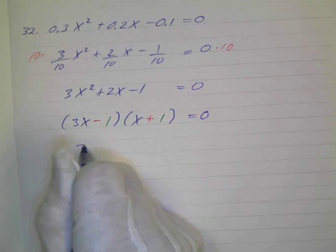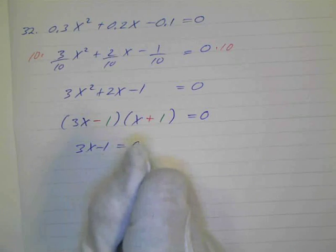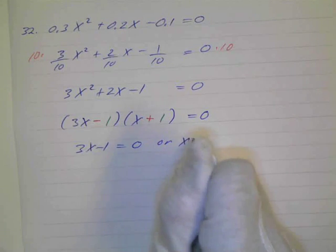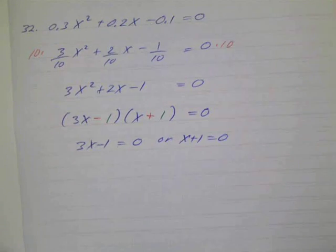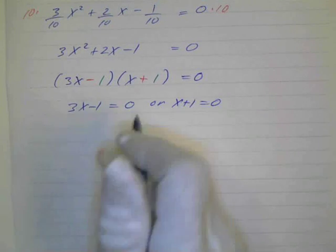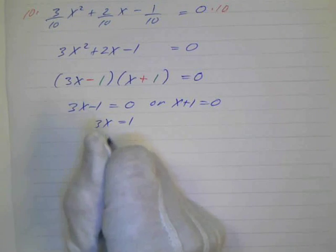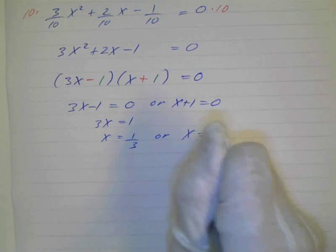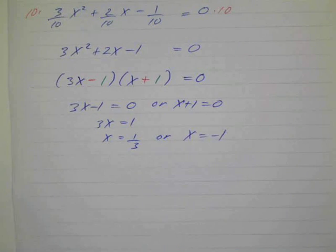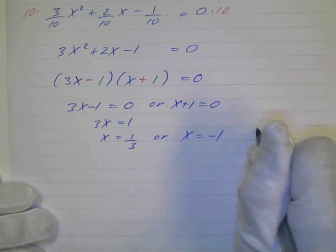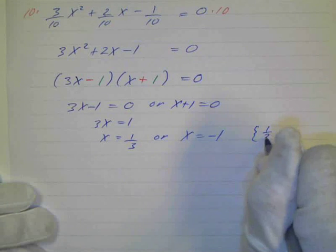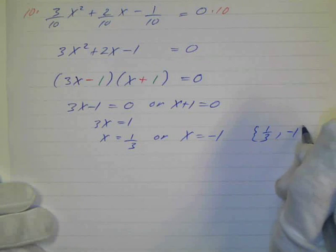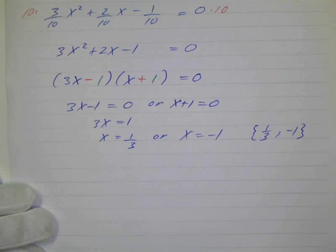So we know that either 3x minus 1 equals 0, or x plus 1 equals 0. And then I can add 1, so 3x equals 1, so x equals 1 third, or x equals negative 1. So your solution set is 1 third, negative 1. All right?